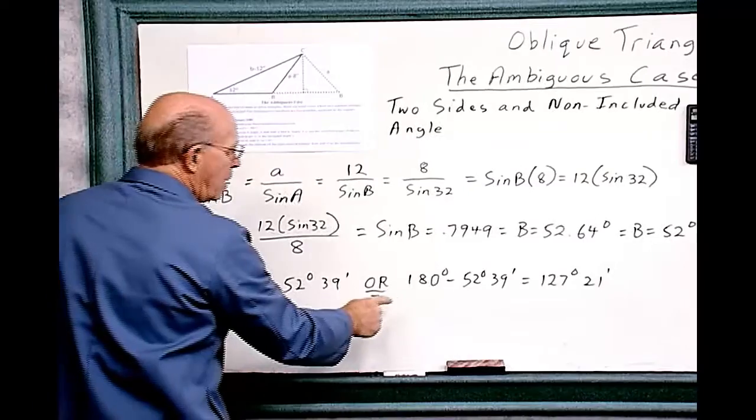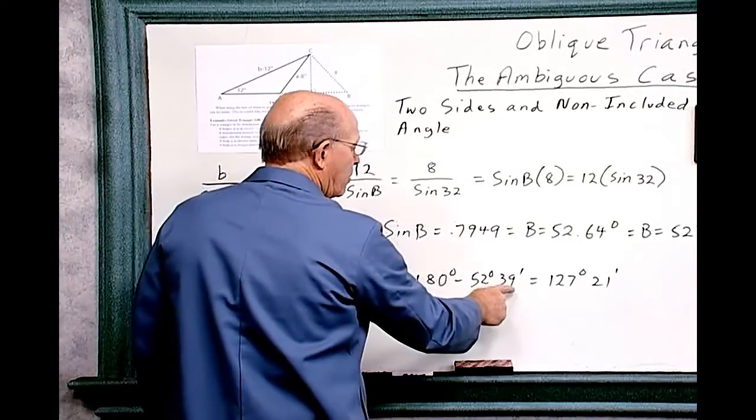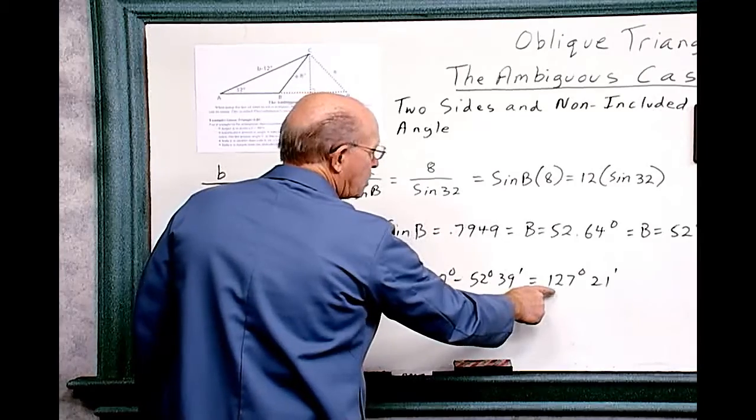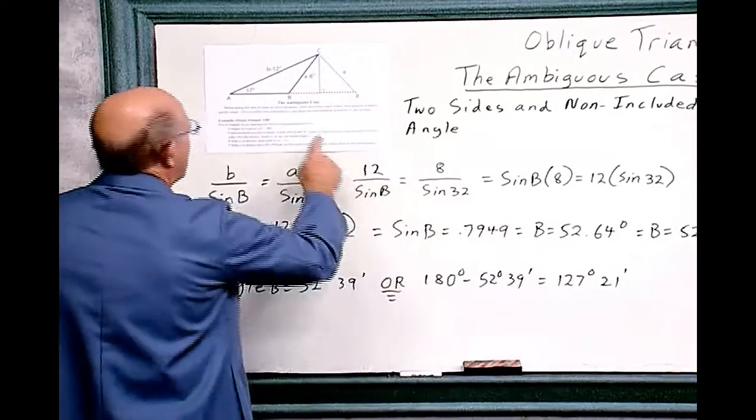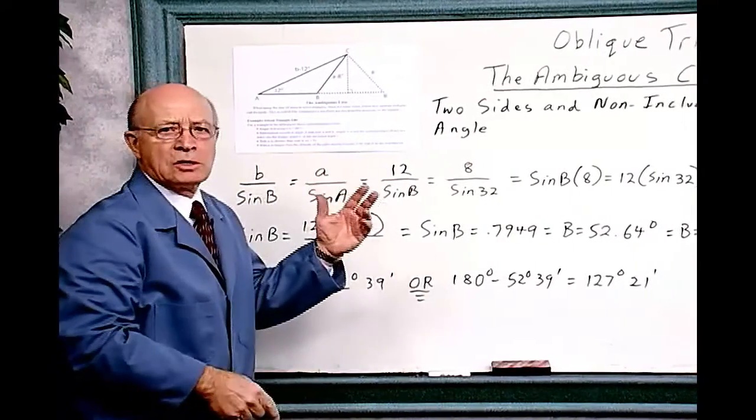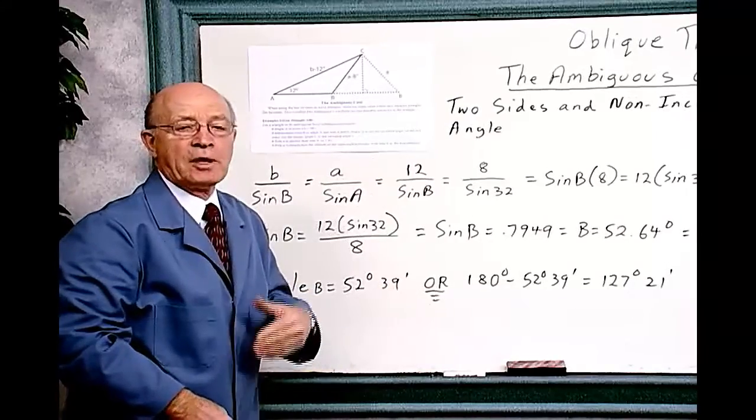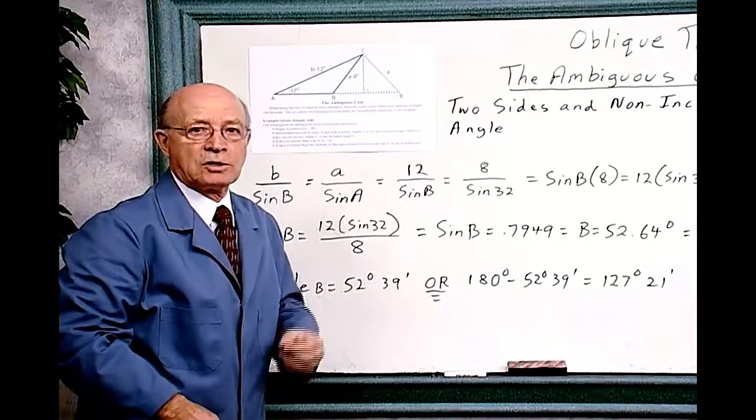Or, it's 180 degrees minus 52 degrees 39 minutes, which equals 127 degrees 21 minutes. And that's this angle over here. So in the ambiguous case, you have two solutions for the triangle. You have to be careful to find the right solution.